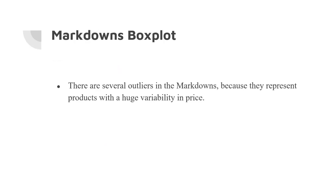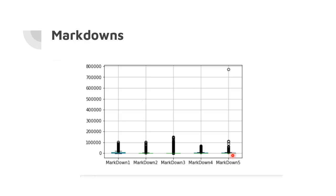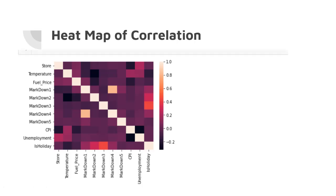There are several outliers in the markdown box plot because they represent products with huge variability in price. Especially for markdown 5, there is an outlier at $800,000. There definitely needs to be more research done on the values of these markdowns and what factors are affecting the markdowns in weekly sales. The heat map shows the correlation between each variable, so there is a correlation between markdown 4 and markdown 1, as well as markdown 3 and whether it's a holiday. There needs to be more research done to see what is causing these correlations.